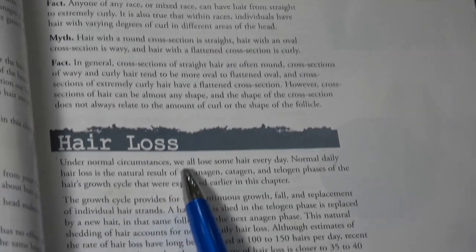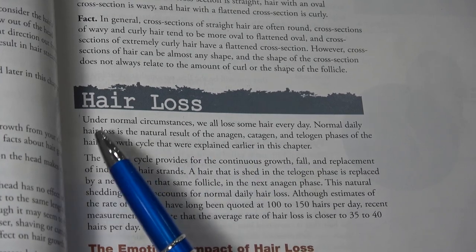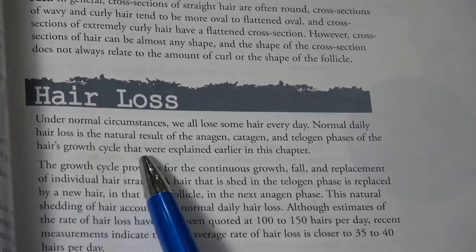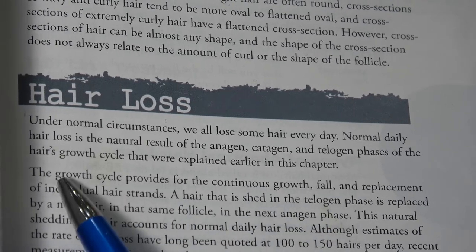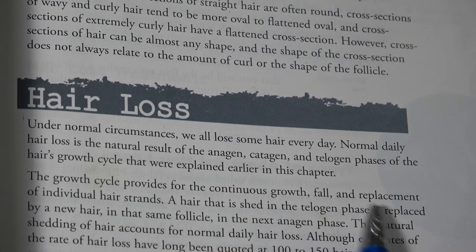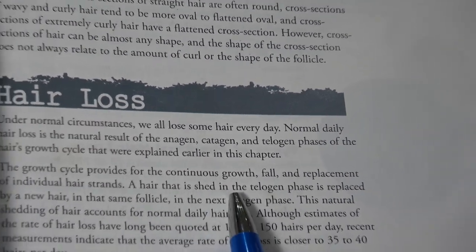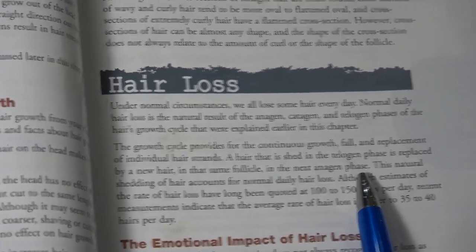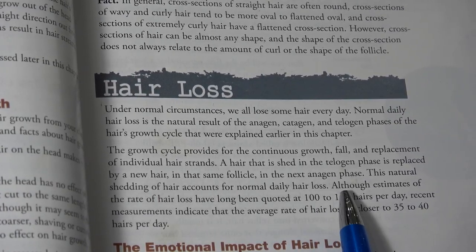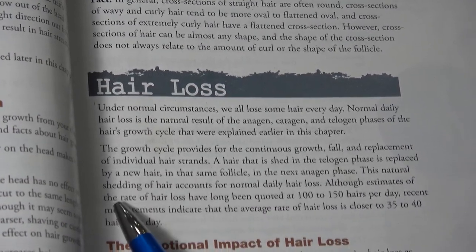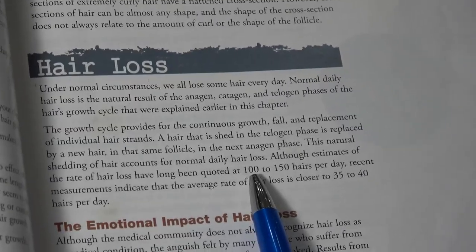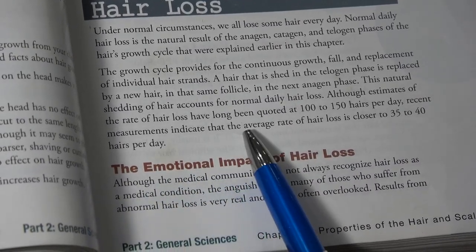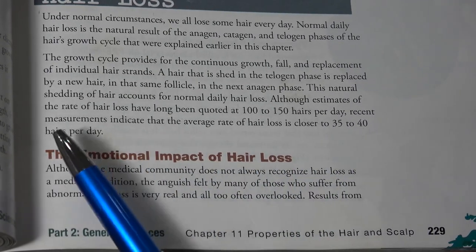Hair loss: under normal circumstances, we all lose some hair every day as a natural result of the anagen, catagen, and telogen phases of the hair growth cycle. The growth cycle provides for continuous growth, fall, and replacement of individual hair strands. A hair shed in the telogen phase is replaced by a new hair in the same follicle in the next anagen phase. Estimates of the rate of daily hair loss have been quoted at 100 to 150 hairs per day; however, recent measurements indicate that the average rate is closer to 35 to 40 hairs per day.